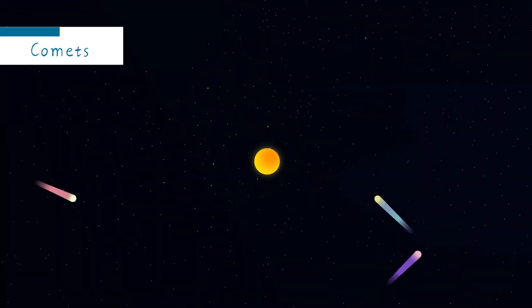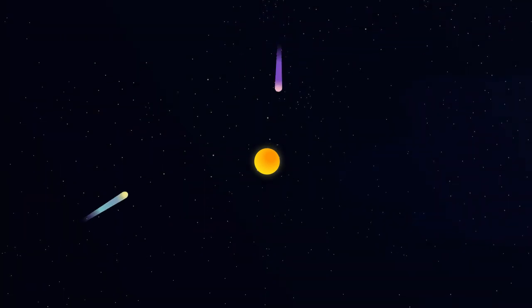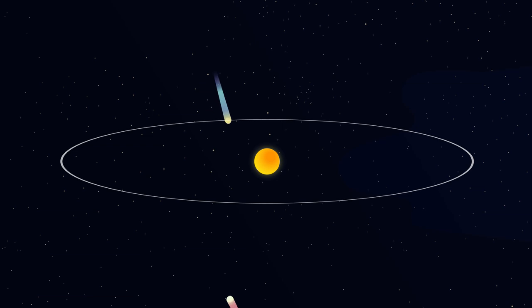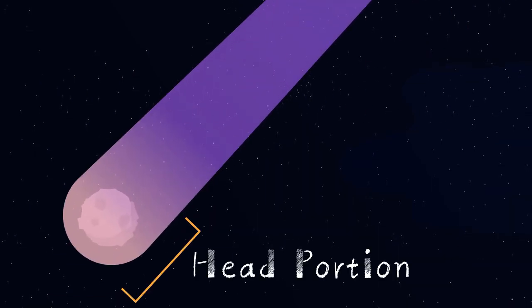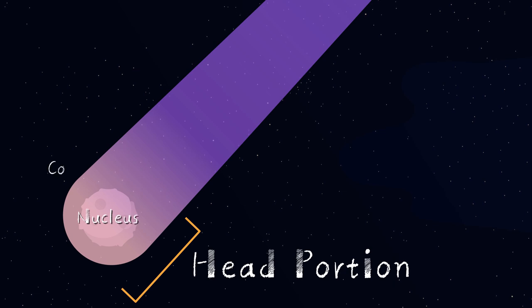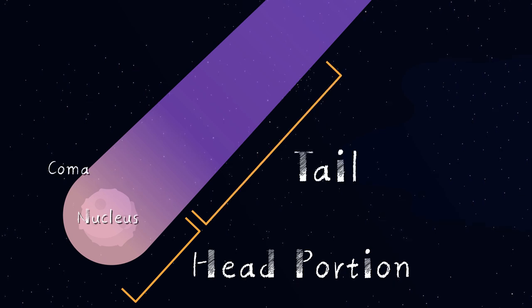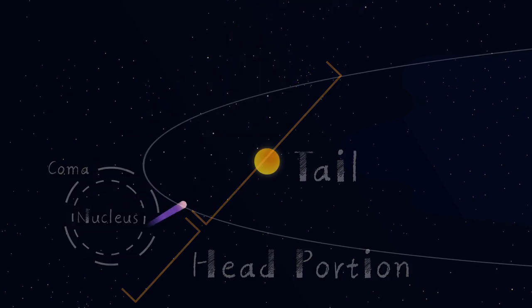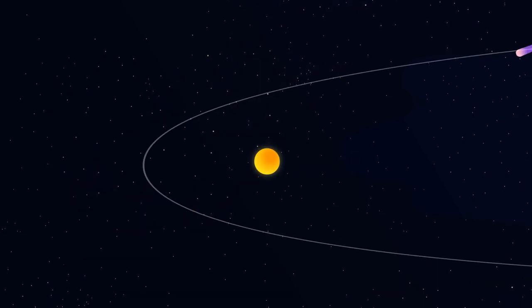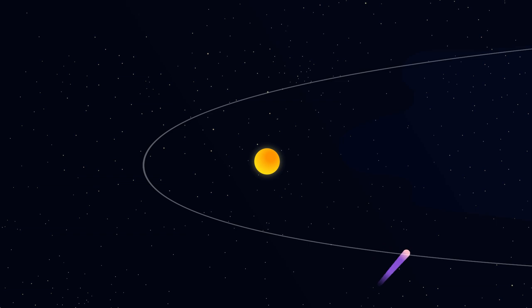Comets are another type of celestial body that orbits the Sun. Comets have elliptical or parabolic orbits and are made up of a head portion, which is comprised of a nucleus and a coma, and a tail. At the center of the coma is the nucleus. The closer a comet gets to the Sun, the quicker it moves and the longer its tail.